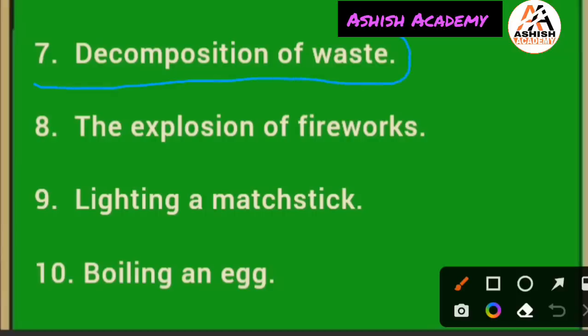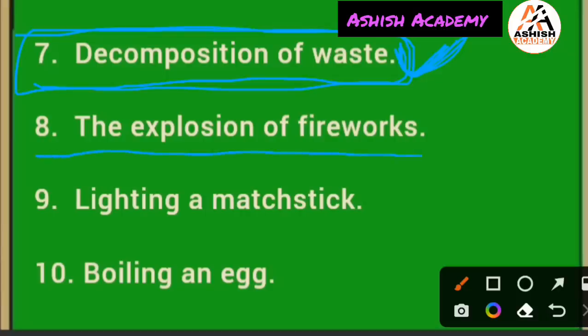Next example: decomposition of waste. Waste materials like vegetable peels are thrown out and decomposed by bacteria. These are called decomposers. So decomposition of waste — waste material sadna (rotting) — is a chemical change; a new substance is formed by bacteria. Next: the explosion of fireworks — patakhe ka fatna. When it explodes, light is produced and heat energy is released, so this is a chemical change.